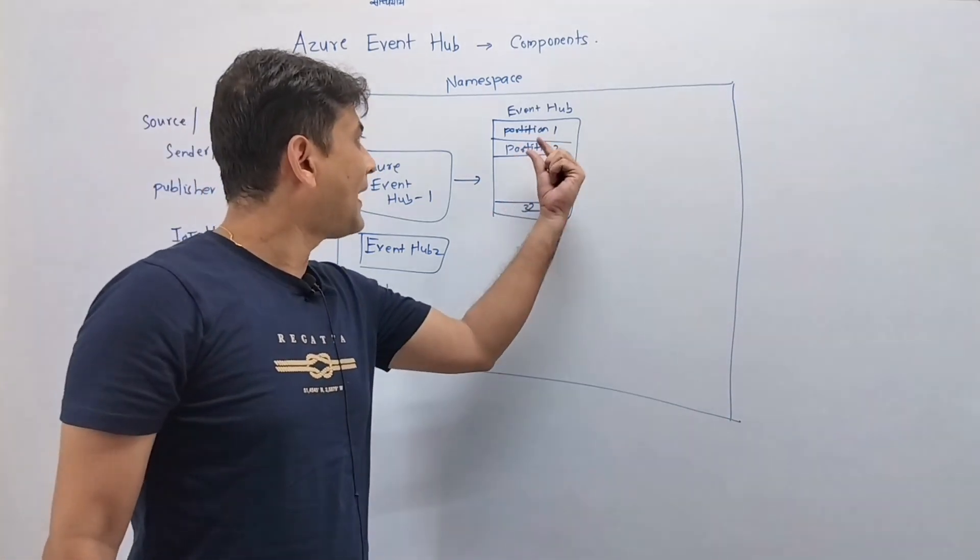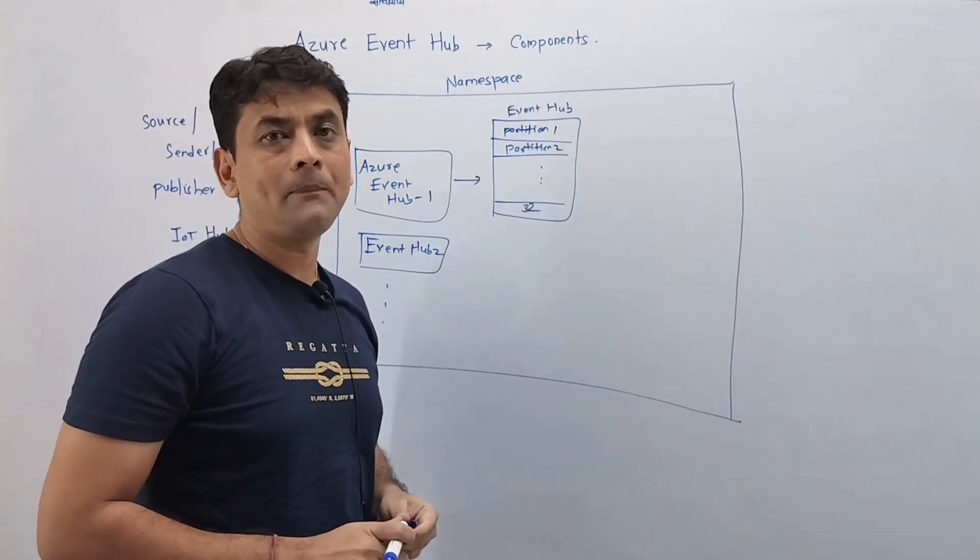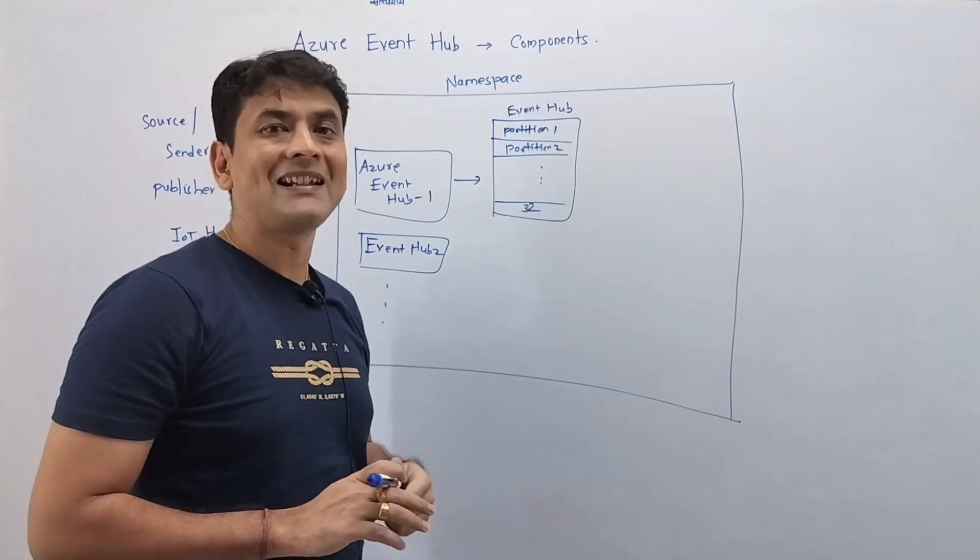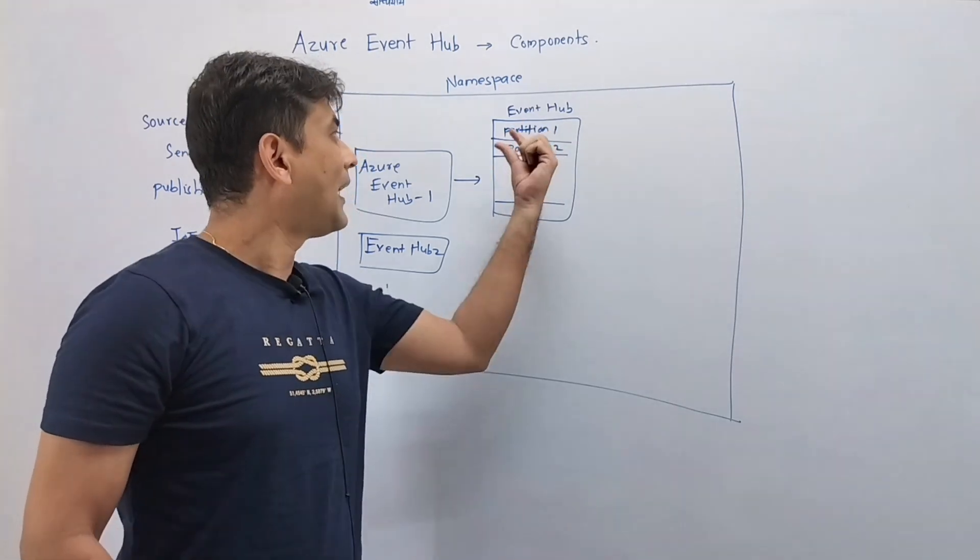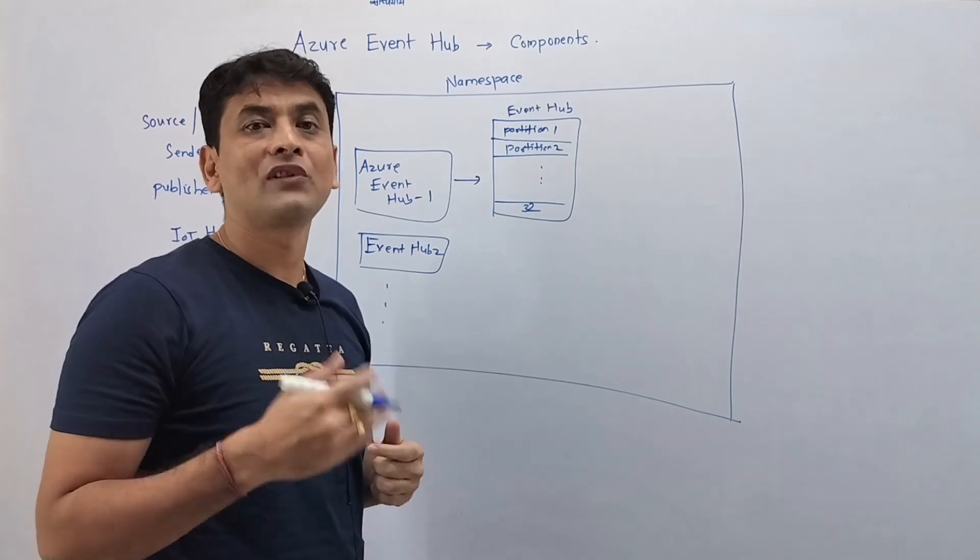So similarly, because we have partitions within the Event Hub, that's why this Event Hub can handle huge amount of data. Because partitions provide parallel processing of data.